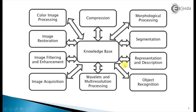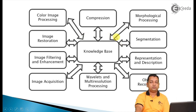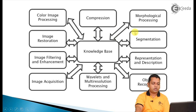So the fundamental steps extend from acquiring the image all the way to recognizing objects in the image data. The classification we have made is: methods whose input and output are images, and methods whose inputs are images and outputs are attributes. From image acquisition to morphological processing is the first category, and from morphological processing to object recognition is the second category.